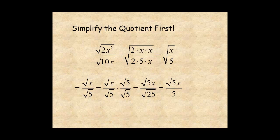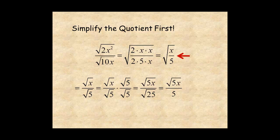This example reminds you to simplify the quotient before you try to rationalize. Bring the quotient under the radical. Factor the numerator and denominator. Cancel common factors of 2 and x. The expression simplifies to radical x over 5. Then rationalize the denominator: multiply by radical 5 over radical 5. The denominator becomes radical 25, which is 5.